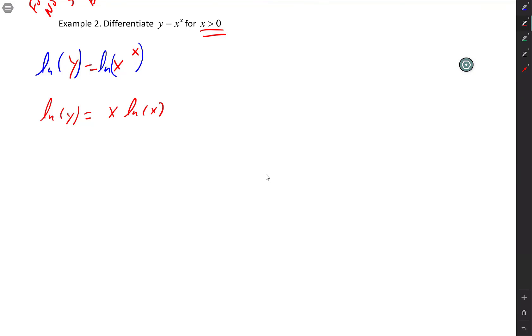So what's the derivative of ln y? Yep. 1 over y dy/dx equals. And then what rule do I got to use here? Product. Product. First times derivative of the second plus second times derivative of the first.